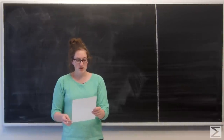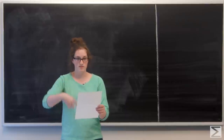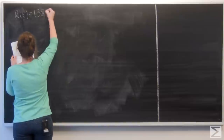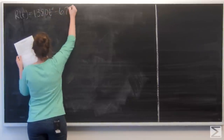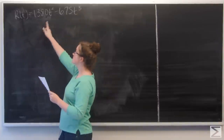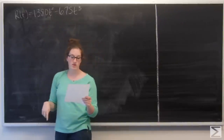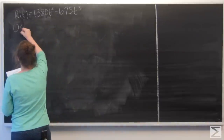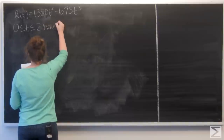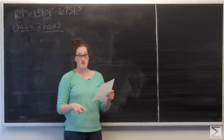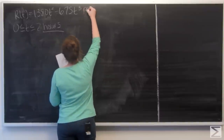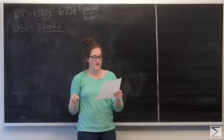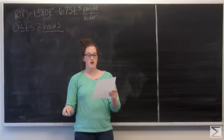The rate at which people enter an auditorium for a rock concert is modeled by the function r of t equals 1380t squared minus 675t cubed, from t equals zero to t equals two hours. r of t is measured in people per hour. No one is in the auditorium at time t equals zero when the doors open. The doors close and the concert begins at time t equals two.